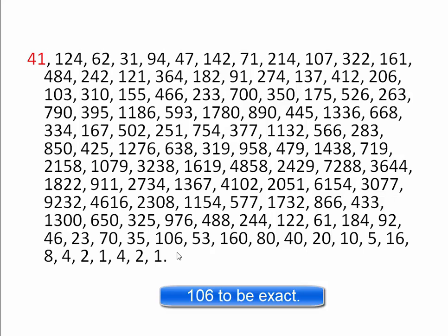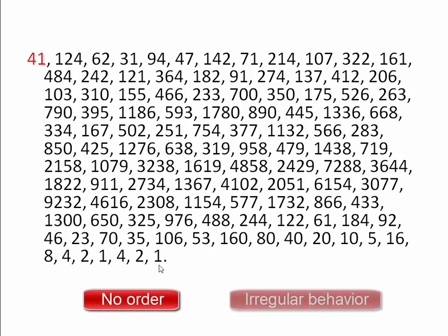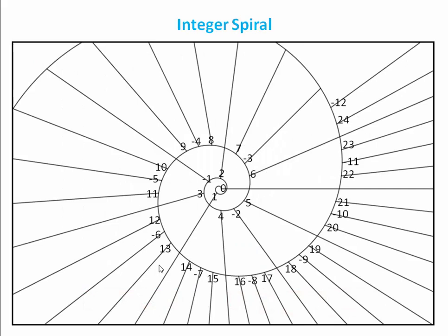It is for this very reason that the conjecture is sometimes referred to as the hailstone problem, since just like a hailstone, the numbers will rise and fall before finally reaching 1. Indeed, the numbers seem to follow no order and resist every attempt to understand their behavior.